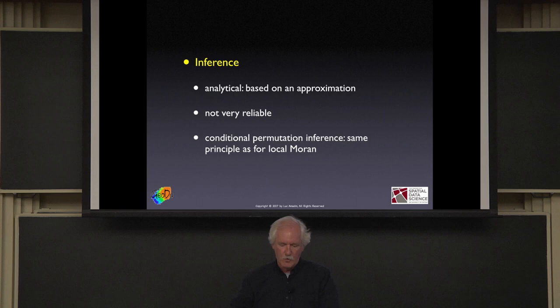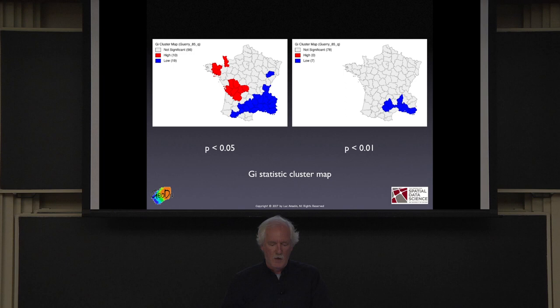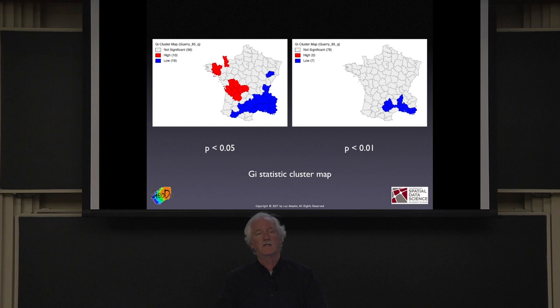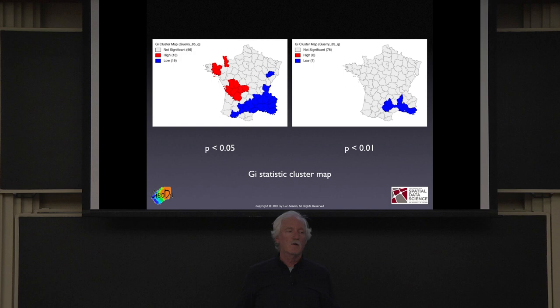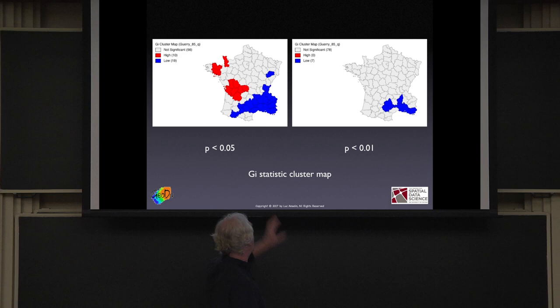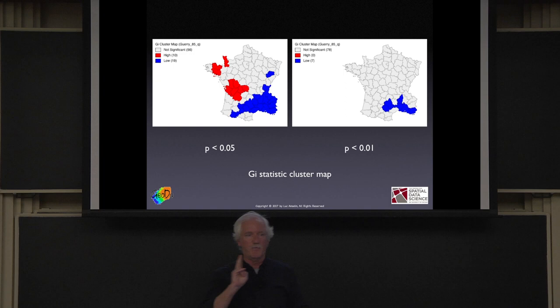The great advantage of the Getis-Ord statistics relative to local Moran is that you have the interpretation right away — positive is a hot spot, negative is a cold spot. The hot spots are red, cold spots are blue. If you have a good visual memory, you'll recognize this as essentially the same map as local Moran's I, except that what is red in Getis-Ord is identified as outliers in Moran, and similarly for blue. In my experience there isn't really a lot of difference between GI and GI star statistics.